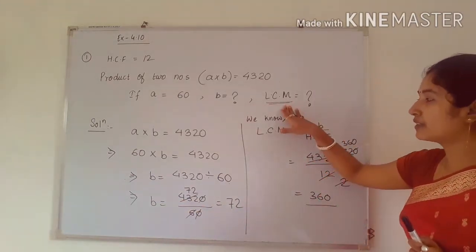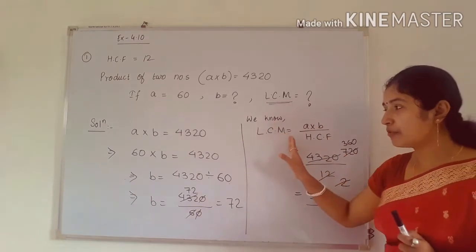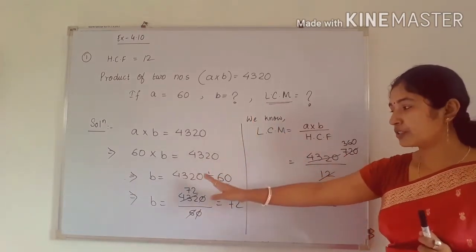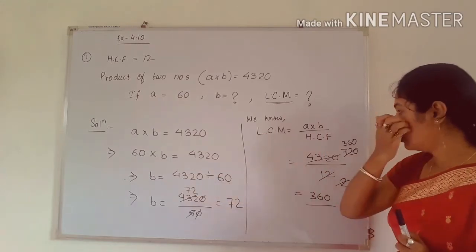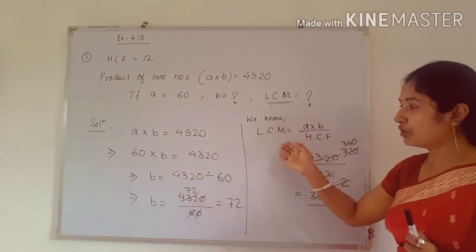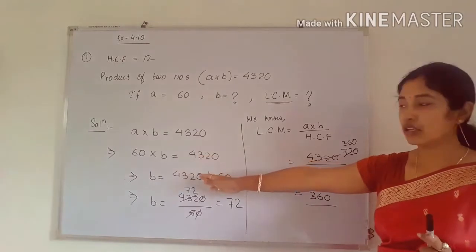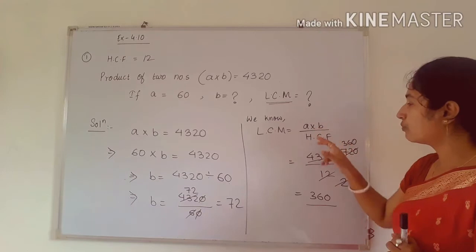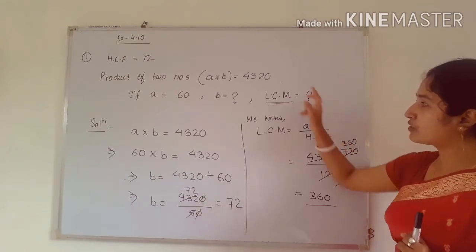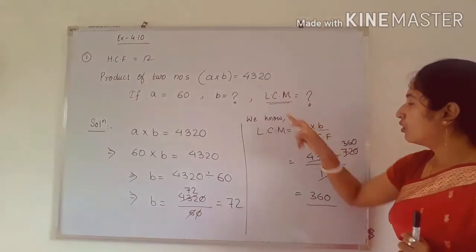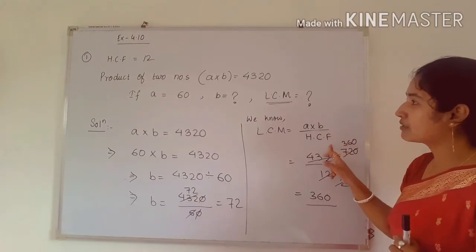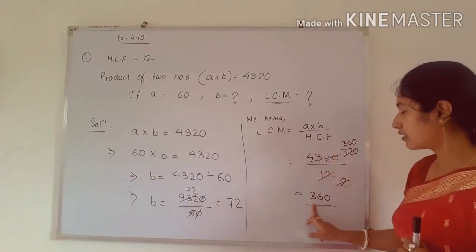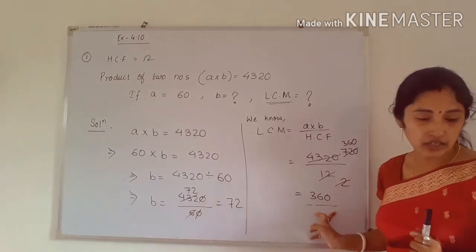Next, find the LCM. We know LCM = (A × B) ÷ HCF. The product of the two numbers is 4320, and HCF is 12. So 4320 ÷ 12 = 360. The LCM is 360.